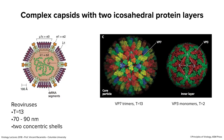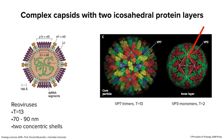Another interesting example are reoviruses, where you have two icosahedral shells — one inside and one outside. This is a virus with double-stranded RNA segments. On the right are the two different shells: the outer shell consists of VP7 trimers in a T=3,13 arrangement, and the inner shell is a T=2 arrangement with different symmetry altogether. Why does this virus need two shells? The outer shell protects the virus as it goes through the intestinal tract, and when the outer shell is removed inside the cell, that primes the inner shell for entry.